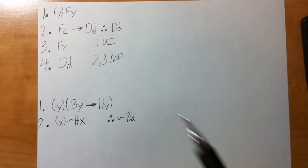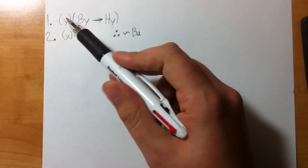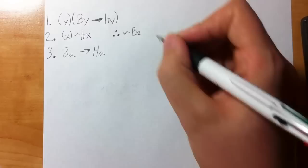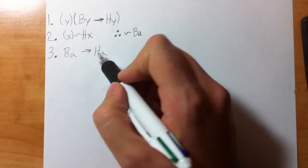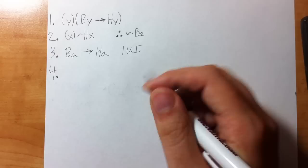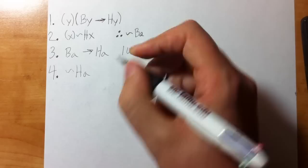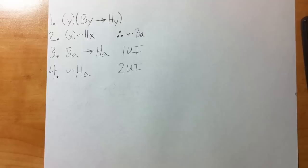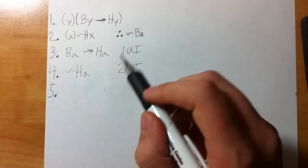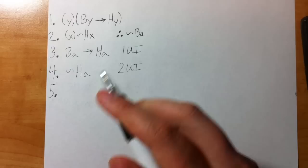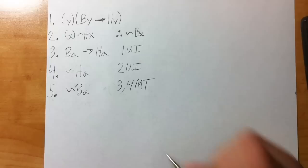Here's a longer universally quantified statement. I see A in my conclusion, so I'll unpack both lines using A: BA arrow HA — these have to stay the same letter, line one UI. When I do UI on line two I could put any letter, but I make it match when I can. Always remember your original rules — MP, MT, DS, HS — those come up just as much as on a regular test. For example, tilde BA from lines three and four by MT.